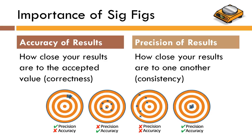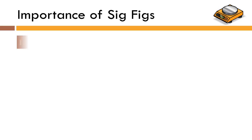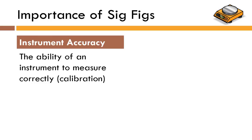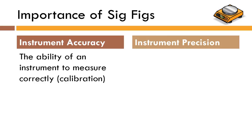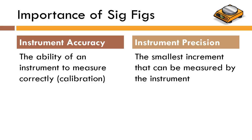Where sig figs come into play is not when we're talking about precision and accuracy in terms of results, but when we're looking at instrumentation. When we talk about instrument accuracy, we're looking at the ability of an instrument to measure correctly — in other words, has it been calibrated correctly? If you place a hundred-gram mass on an electronic scale and it reads 100 grams, it is calibrated. Sig figs are a big deal with instrument precision — we're talking about the smallest possible increment that can be measured by the instrument. So let's look at an example.